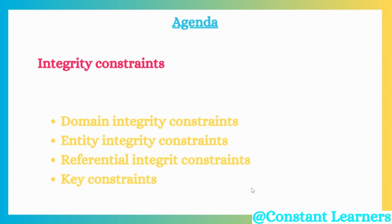Hello learners, welcome back to Constant Learners. In today's video, we are discussing integrity constraints and then we will discuss the four different types of integrity constraints. For understanding integrity constraints, it is important that we understand what an entity is and what attributes are. If you haven't watched the previous video about data models, the link is shared above and in the description box below. Please watch that video first, then let's get started.